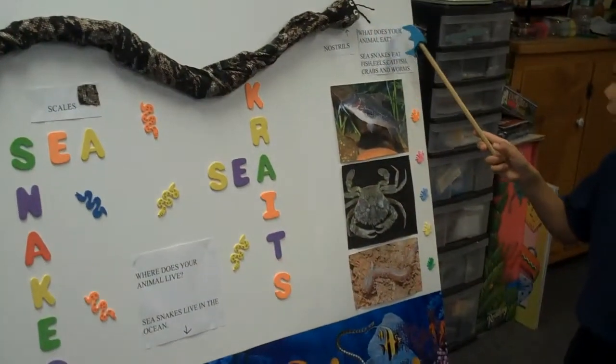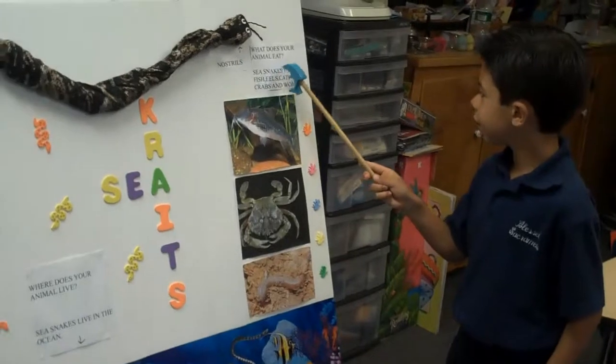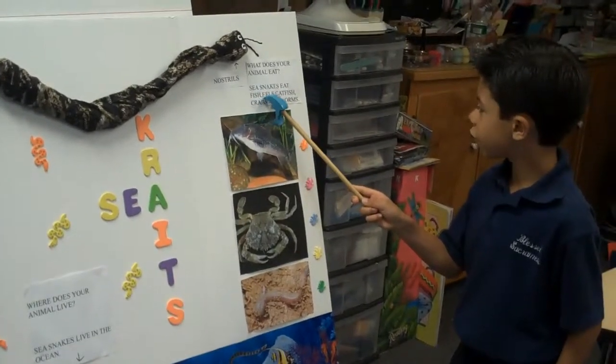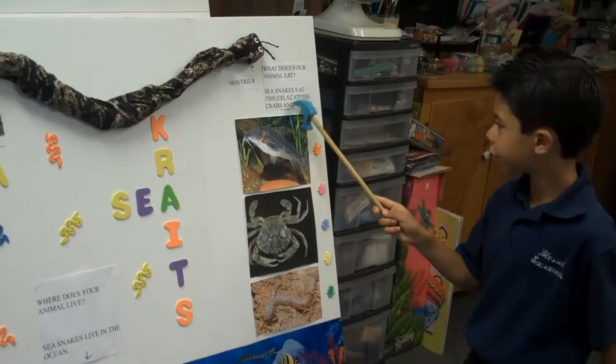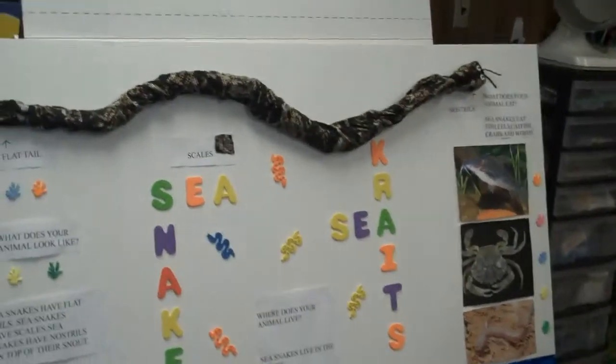What does your animal eat? Sea snakes eat fish, eels, crabs, catfish, crabs, and worms. Gorgeous.